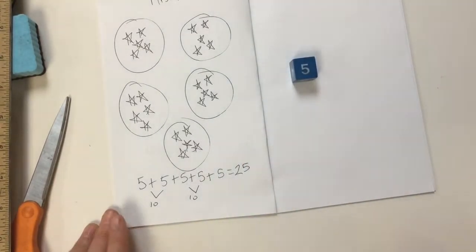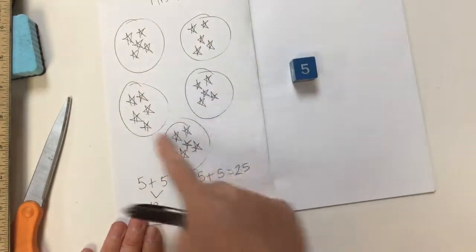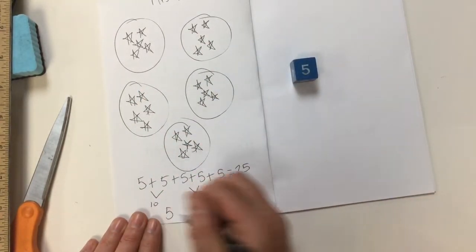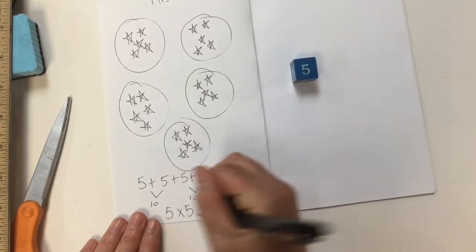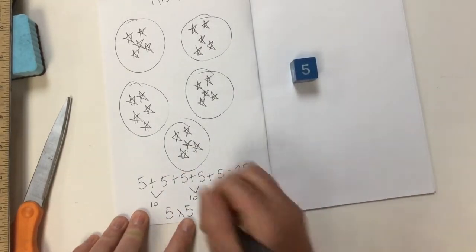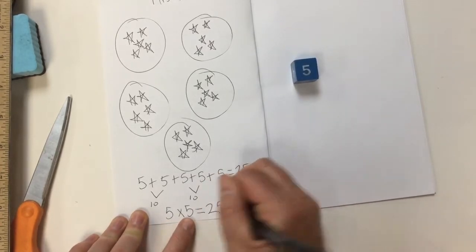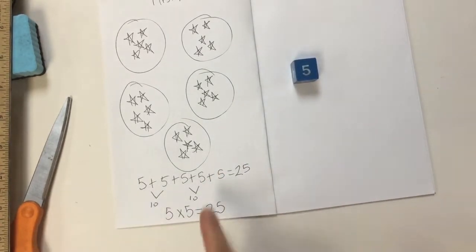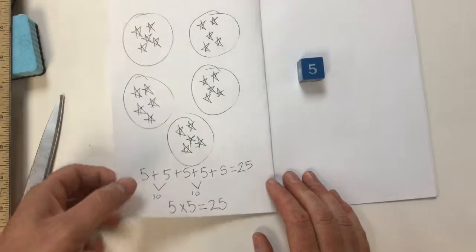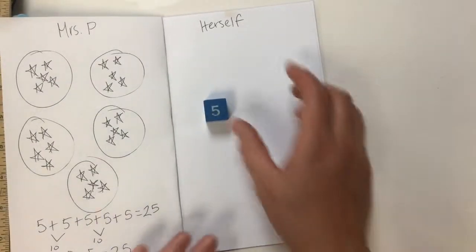Then here's where the multiplication part is. You have these five circles so you write five and there are five stars in each of those five circles. So you do another five and so five times five is 25. That one's tricky because the numbers that I rolled were the same. And then it's the next person's turn.